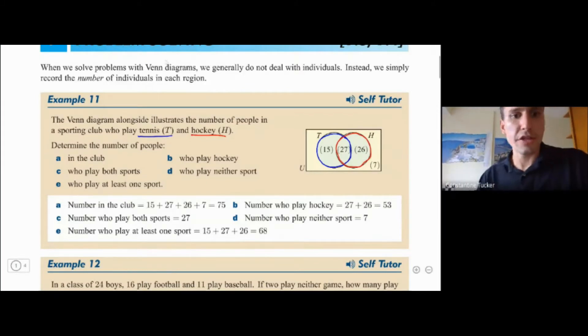Okay so then let's see what they're saying. They're saying determine the number of people in the club. Well if they've given you 15 here, 27 here, 26 here and 7 here, well you add them all up and that gives you how many people you've got in total. So here we add them all up and get 75. Easy peasy.